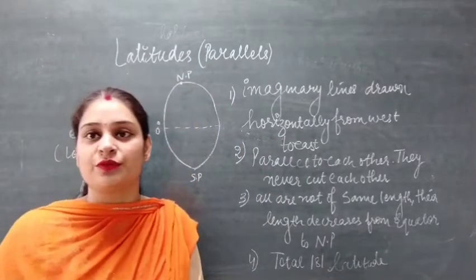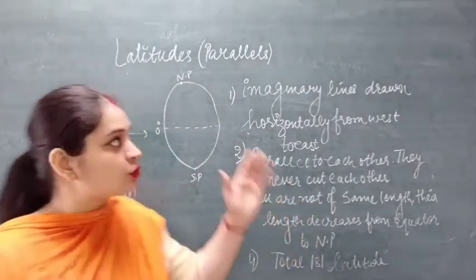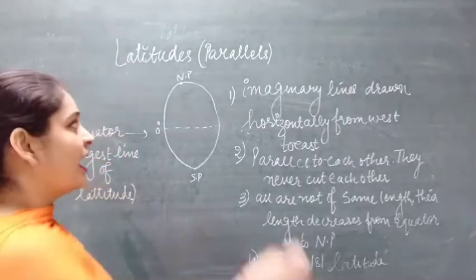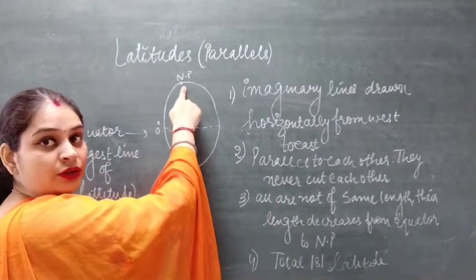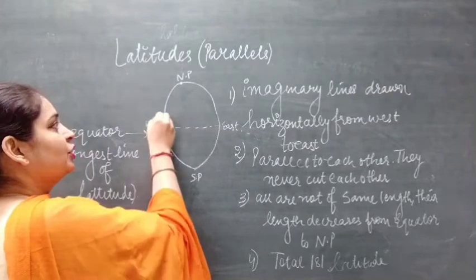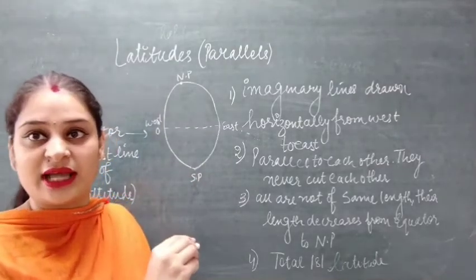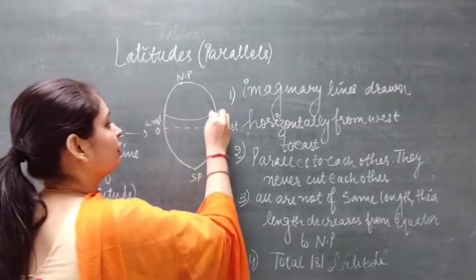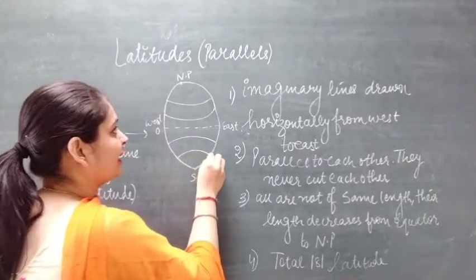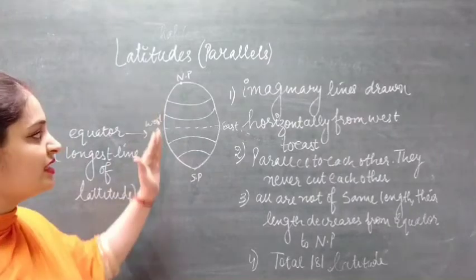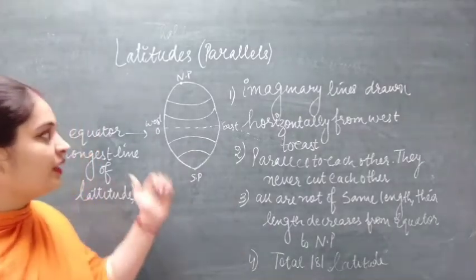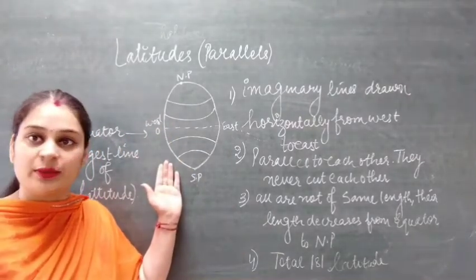The other term used for latitudes is parallels. Latitudes are the imaginary lines which are drawn horizontally from west to east — the top is north direction and the bottom is south. As we can see, these lines are parallel to each other, which is why the other name for latitudes is parallels, meaning they never cut each other.